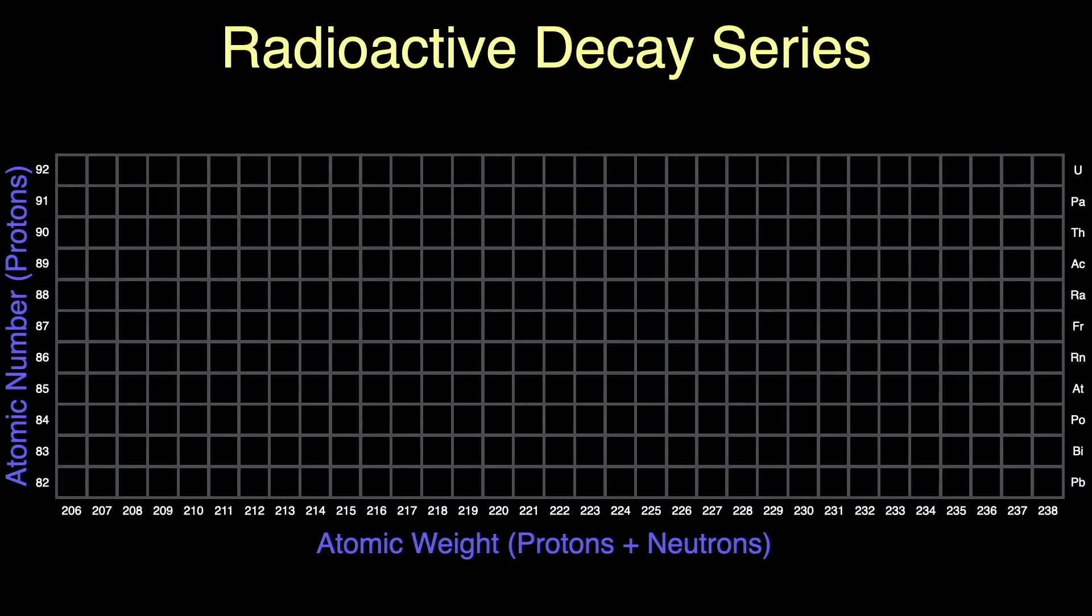Since the atomic number also tells us which element we're dealing with, each row is one unique element. Generally speaking, when an isotope decays, it can do this by emitting an alpha particle or a beta particle. And I'm oversimplifying this, of course. An alpha particle is made up of two protons and two neutrons, four particles in total. So if we start with something like radium-226, it has 88 protons. All radium isotopes have 88 protons. Radium-226 decays by alpha emission, meaning it loses two protons and two neutrons, four particles in total. This means we need to move two rows down for the two protons and four rows to the left for the four total particles. You can see we arrive at radon-222.